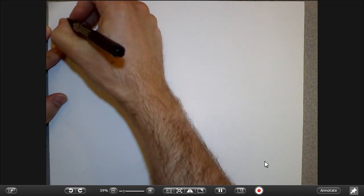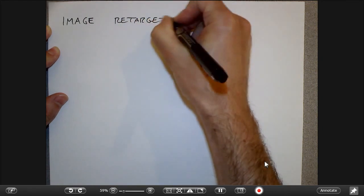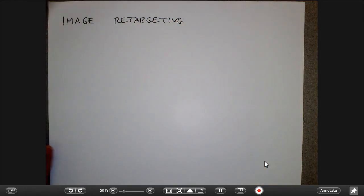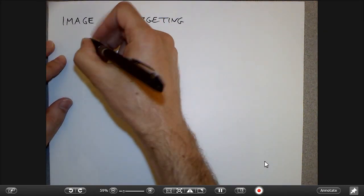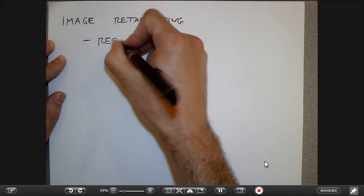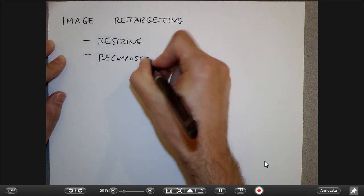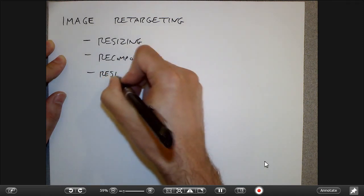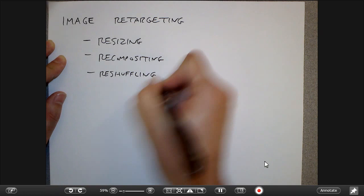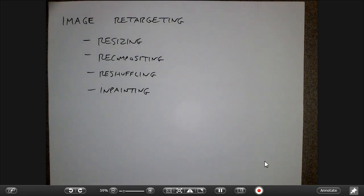Continuing our discussions about extra topics in image processing, today I want to talk about image retargeting, which is a fun application. This falls under a general category that includes resizing, recompositing, and reshuffling. It's also related to inpainting, which we talked about last time — where I have a region of the image I don't want, scribble over it, and erase it from the image.